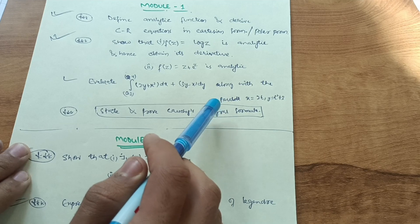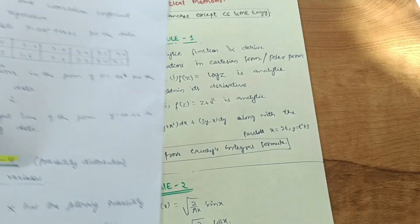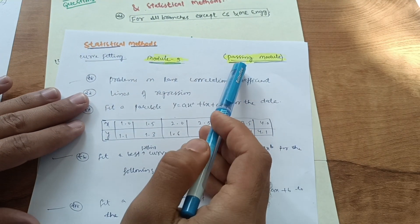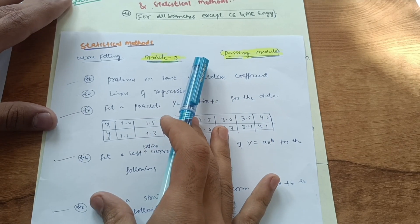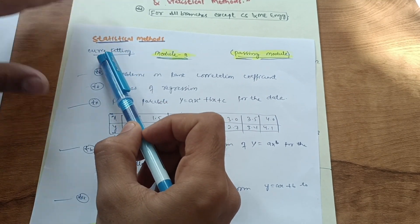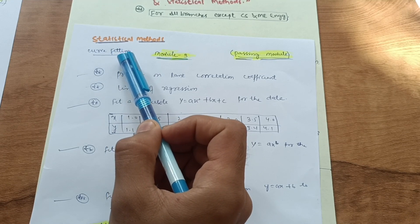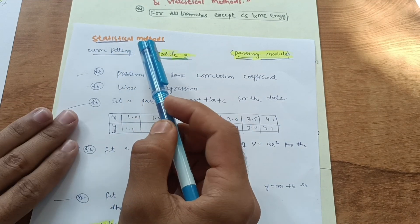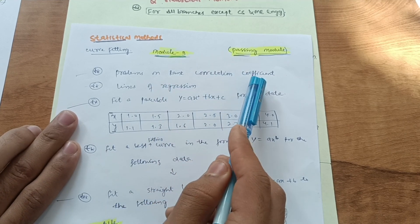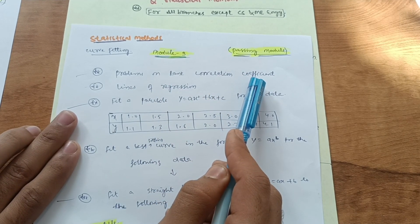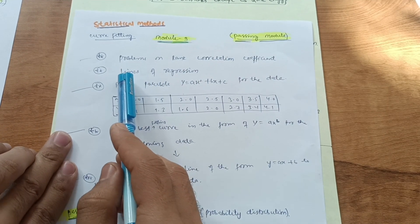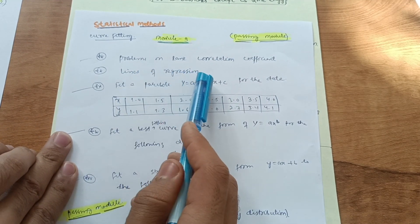Module 3 is a passing module. You have to focus on Statistical Methods, also called curve fitting. It is the most important and also a simpler chapter. You have to find the rank correlation coefficient — this will definitely be a question in the examination. Lines of regression will also be there.